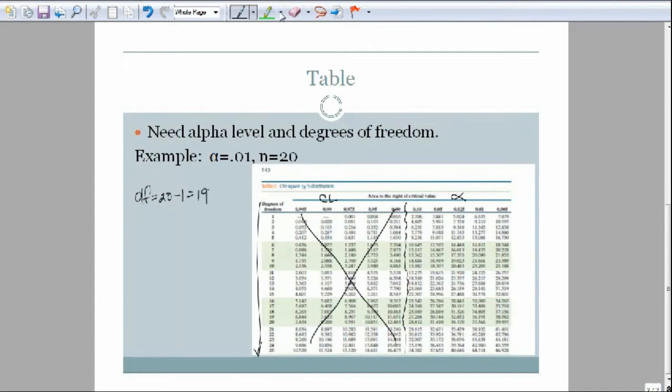We come down our degrees of freedom. Let's come up here and get a highlighter. We come down to 19 and go across. Then we come down to .01, which is this column. Where they meet will be our chi-squared critical value number, and that's right here at 36.191.